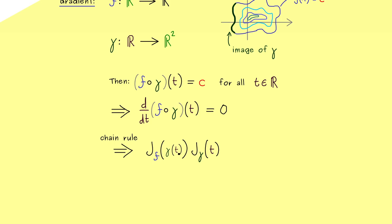However now we have learned in the last video that this Jacobian matrix here for f can be written as a gradient. So I remind you the gradient is just the transpose of the Jacobian matrix. So we have the gradient of f at the position gamma of t. However then we have to substitute this matrix product with the standard inner product.